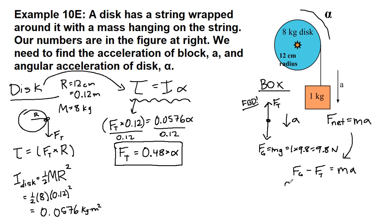All right, plugging in what we have, 9.8 minus the unknown tension, mass here is 1 kg, so 1 times A is just A.